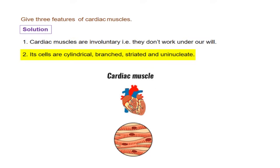Then second is they are cylindrical, they are branched, striated, and uninucleated. What does uninucleated mean? They have just one nucleus. And they are cylindrical in nature, they are striated, that means they have alternating light and dark bands on them, and they are branched.